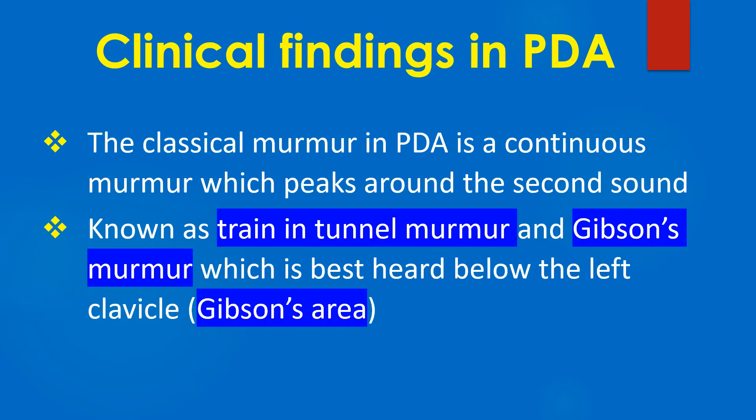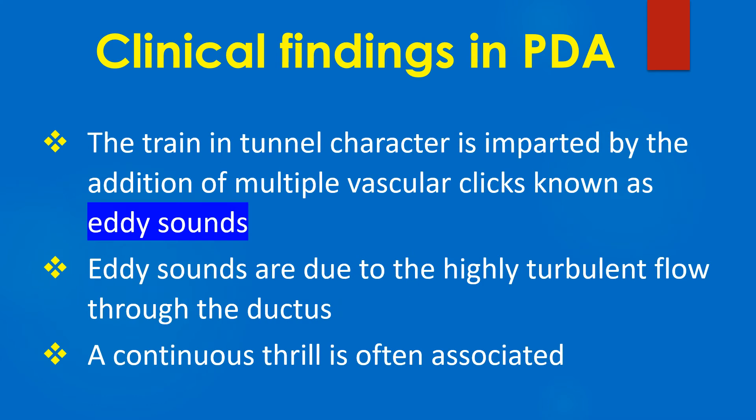The classical murmur in PDA is a continuous murmur which peaks around the second heart sound. It is also known as the machinery murmur and Gibson's murmur. The murmur is best heard below the left clavicle in Gibson's area. The machinery character is imparted by the addition of multiple vascular clicks due to the highly turbulent flow through the ductus. A continuous thrill is often associated.